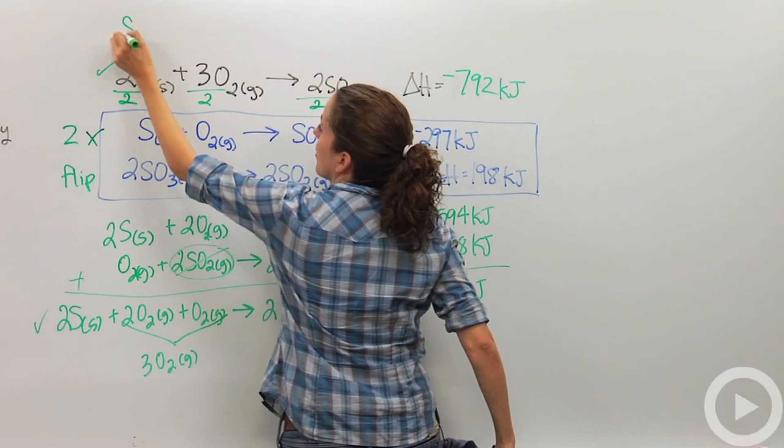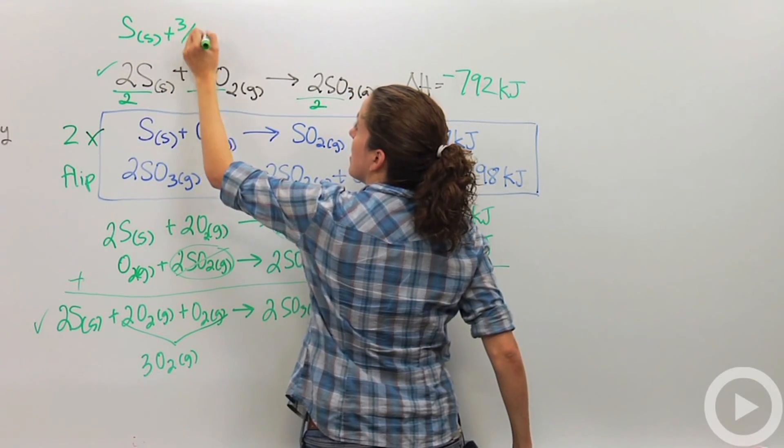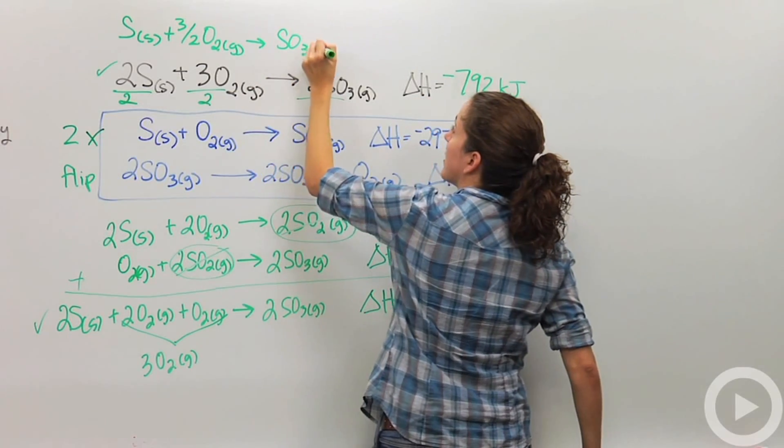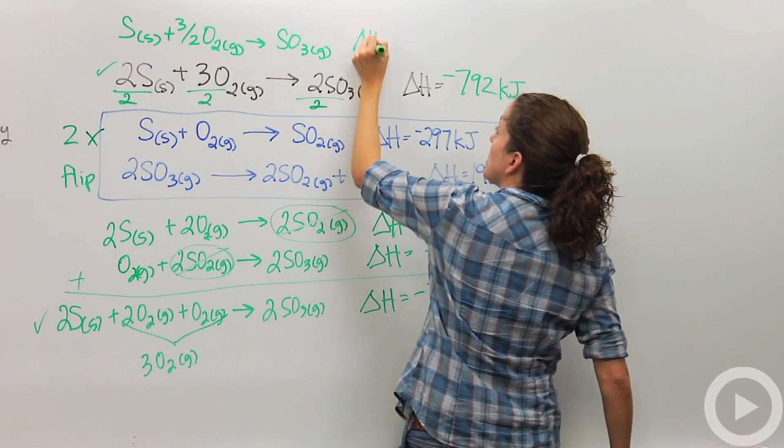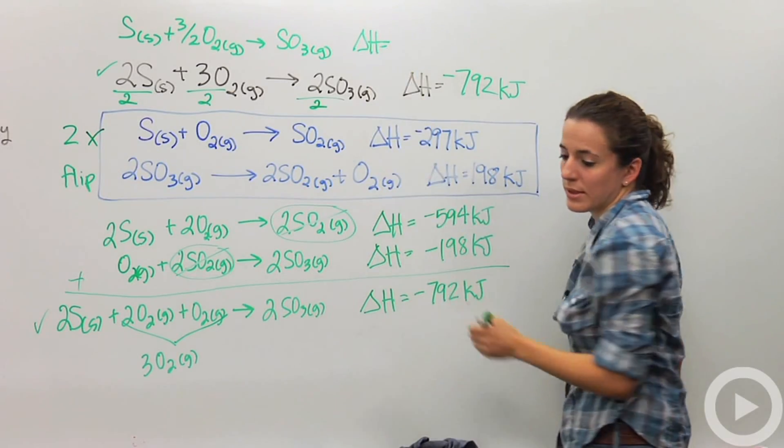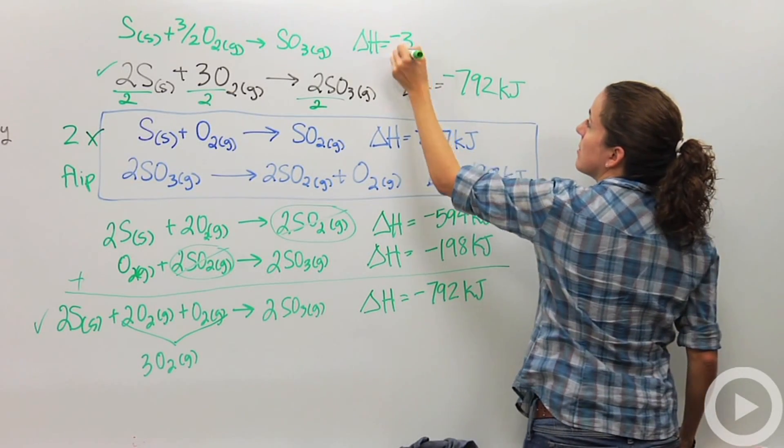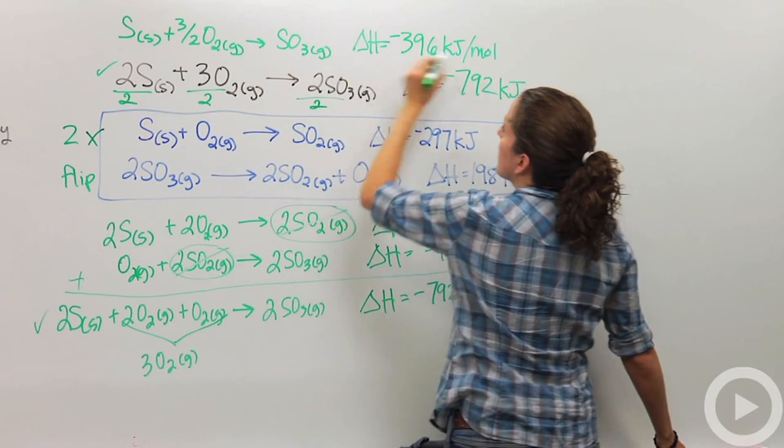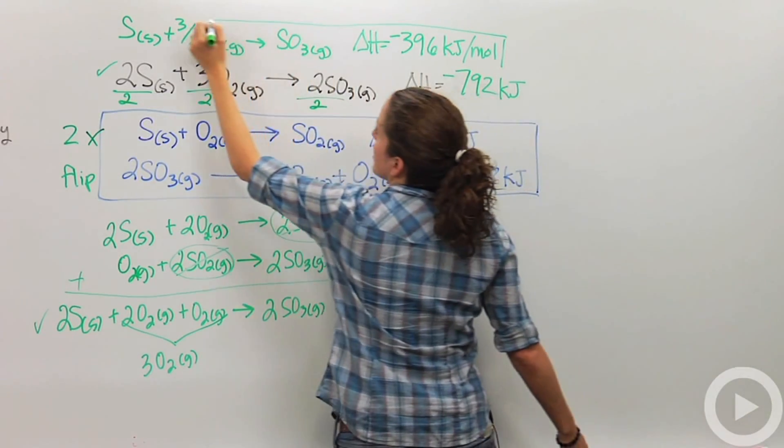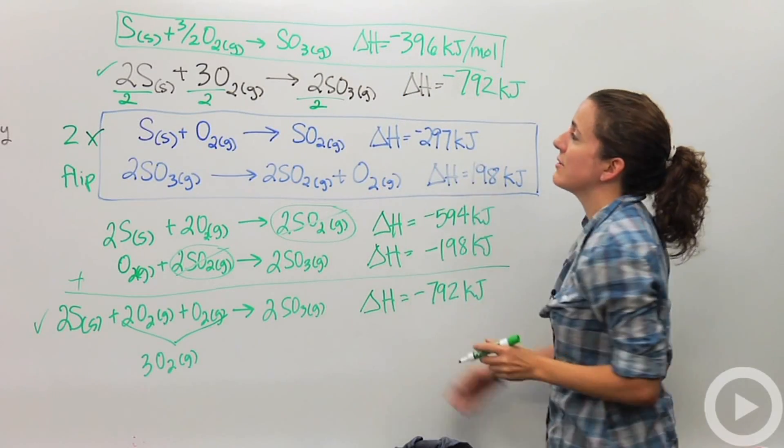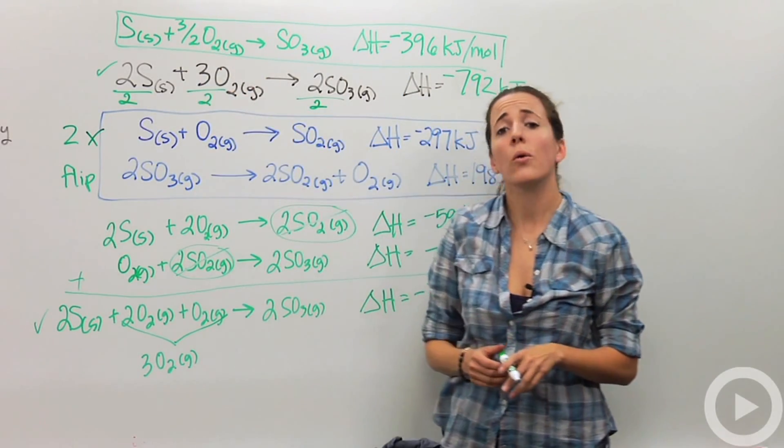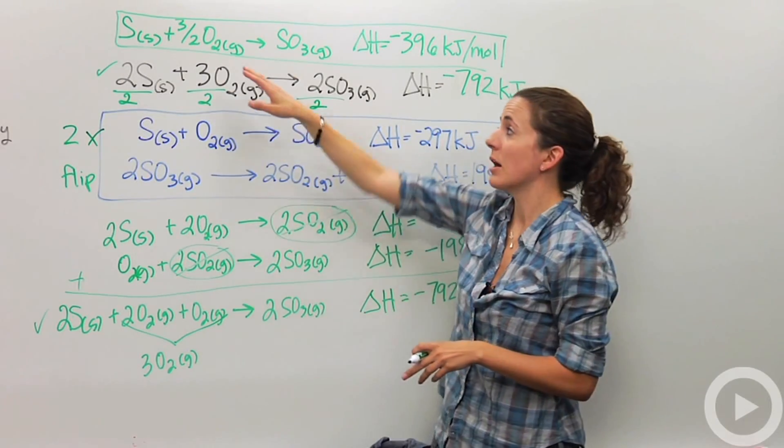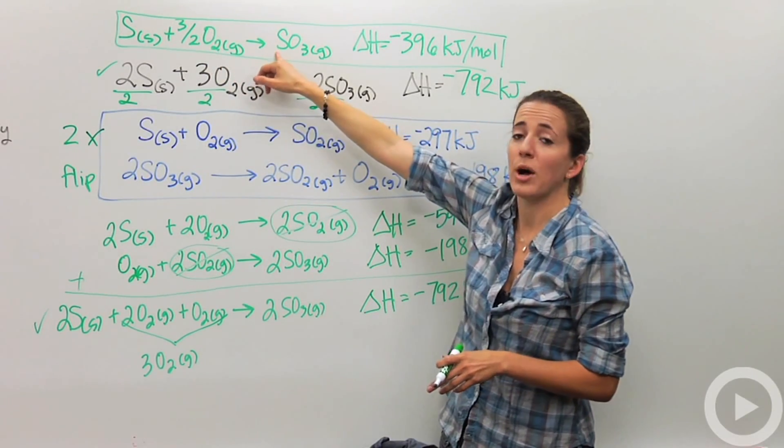Which ends up as sulfur solid plus 3 halves oxygen gas yields sulfur trioxide gas. And then my delta H is also going to be divided by two, which is going to be negative 396 kilojoules. And we can actually say kilojoules per mole, because we have one mole of this. So this is our formation reaction. And notice, this has a fraction in it, but in formation reactions it's totally okay. We are allowed to have fractional coefficients in our formation reactions, because our main important thing is that we have one mole of product.